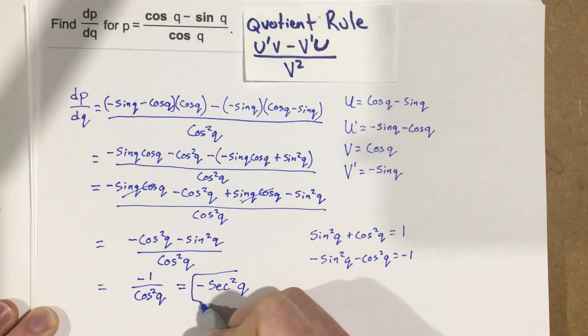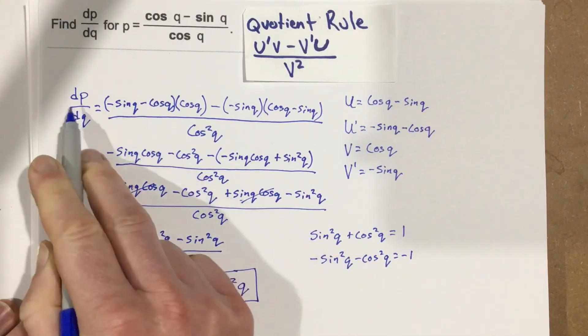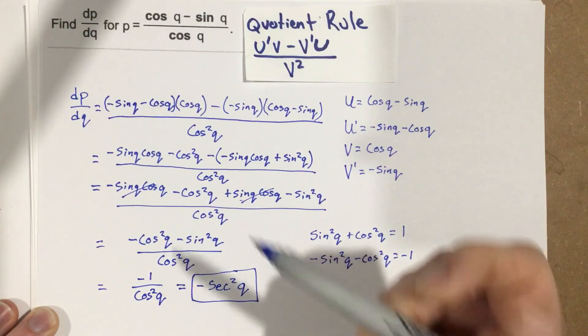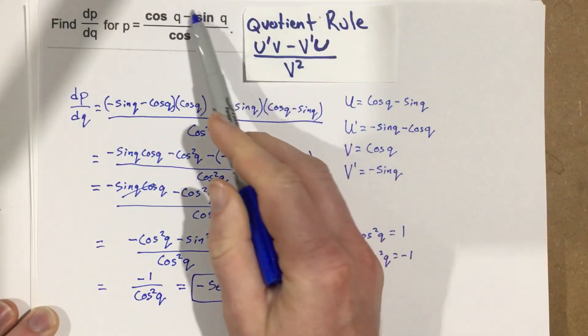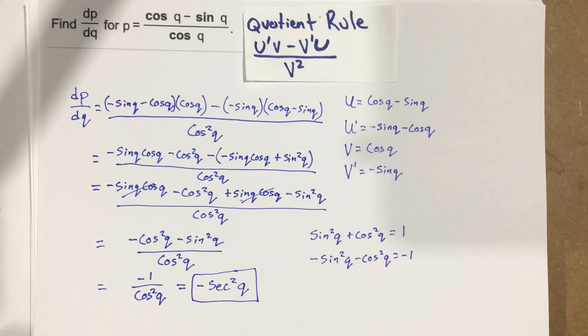So the derivative of P with respect to Q is negative secant squared Q. That's the derivative of our original function.